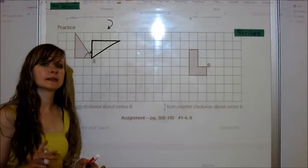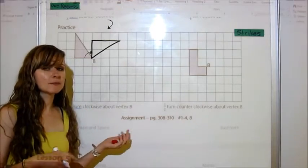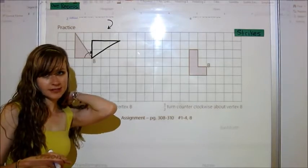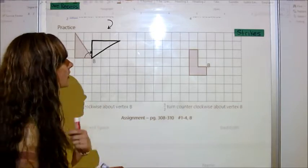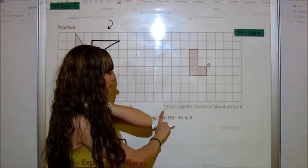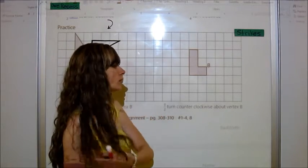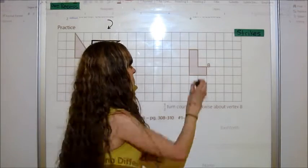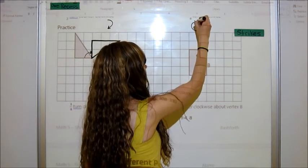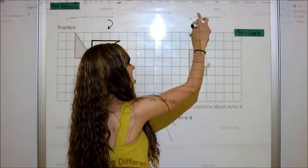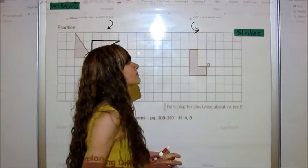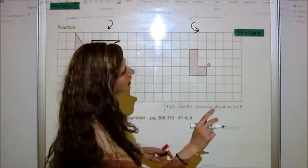So there's my quarter turn clockwise about vertex B. Make sure that yours looks like this. Because it's important that you get the examples right. So that when you do your assignment, you get that right. The last one. A half turn counterclockwise about vertex B. So counterclockwise is going not that way. It's going this way.